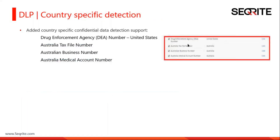In DLP we have also added country-specific detection. For the United States, a law enforcement agency number has been added. For Australia, we have added tax file number, business number, and medical account number in the confidential data section. By default, these data patterns will be monitored automatically by our DLP.